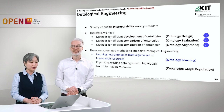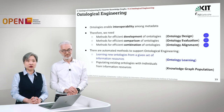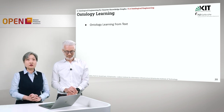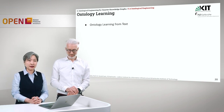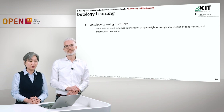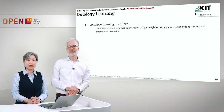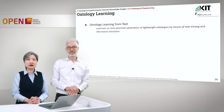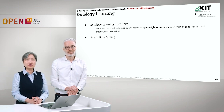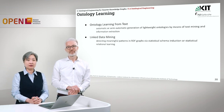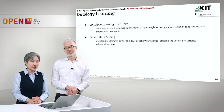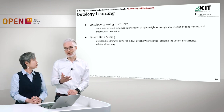There are automated methods to support ontological engineering, one of which is called ontology learning, where we learn new ontologies from a given set of information resources. One such source is raw text — we learn ontologies directly from raw text, either automatically or semi-automatically, learning lightweight ontologies by means of text mining and information extraction, employing natural language processing techniques. The second method is learning ontology from linked data, called linked data mining, where we detect patterns such as class hierarchies from RDF graphs via statistical methods — a kind of empirical knowledge representation.